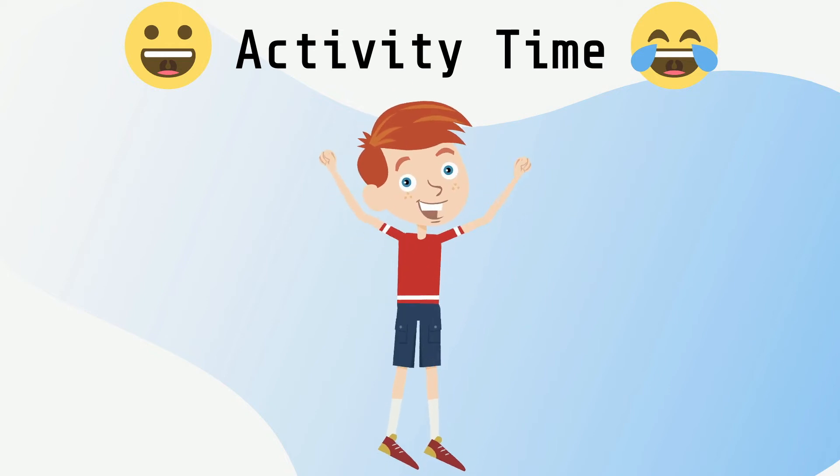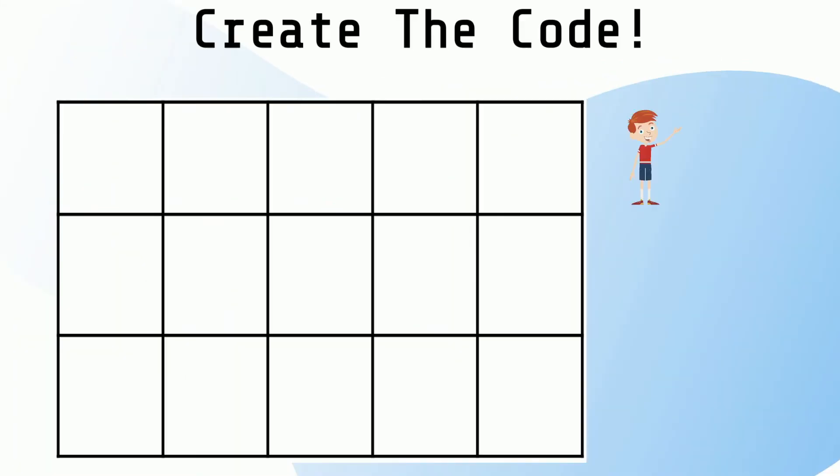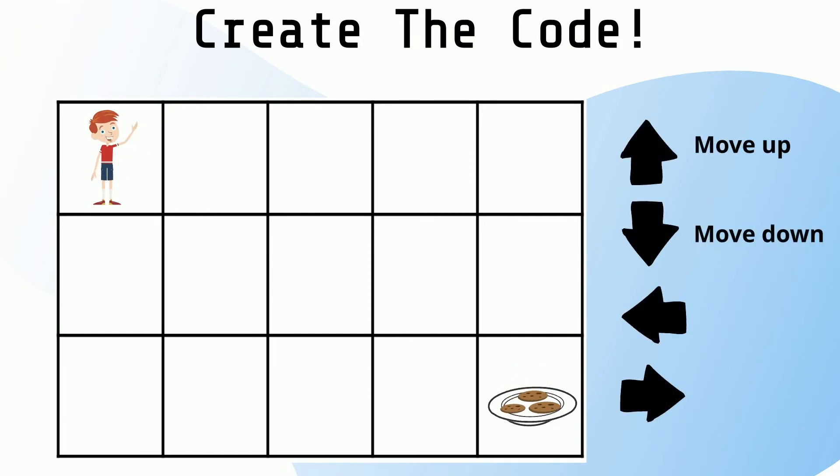Activity time! Today, we will write a code with loops that will help to complete a task. Take a look at the screen. I need an algorithm to help me reach my favorite snack. Here are the codes you'll need to write the algorithm. I can only move up, down, left, and right. Can you write an algorithm with loops that will help me reach my favorite snack? Pause the video here to complete your answer.